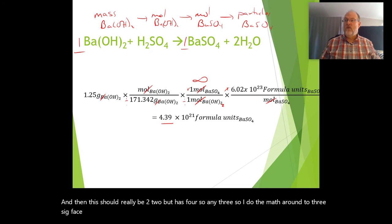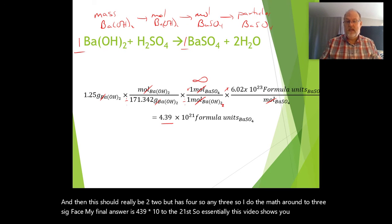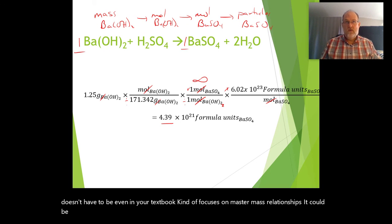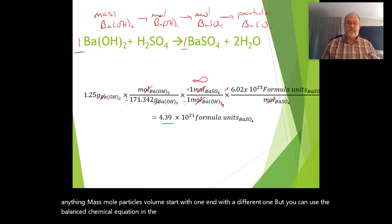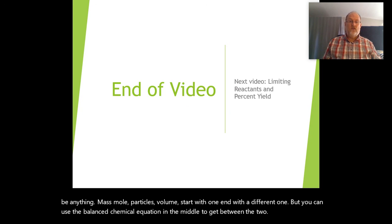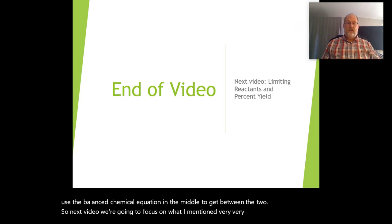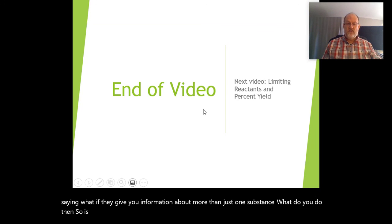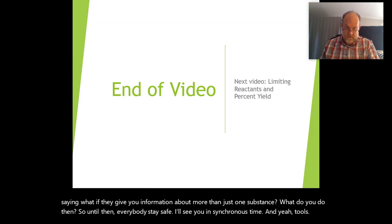So essentially this video shows you how it doesn't have to be mass-to-mass relationships. It can be anything: mass, mole, particles, volume. Start with one, end with a different one, but you can use the balanced chemical equation in the middle to get between the two. Next video, we're going to focus on what if they give you information about more than just one substance. So until then, everybody stay safe. I'll see you in synchronous time.